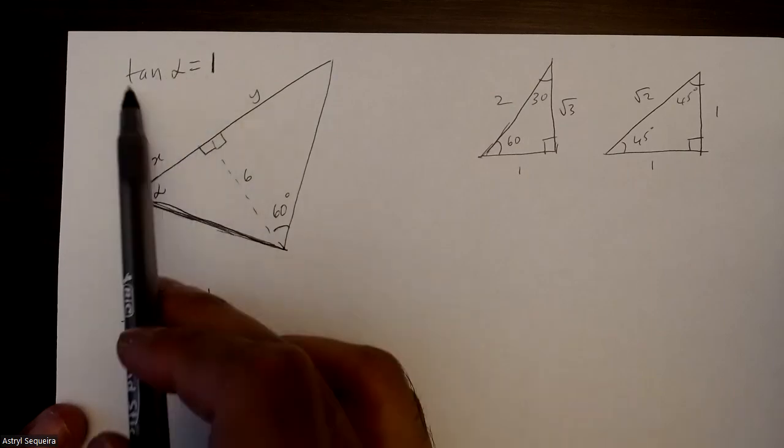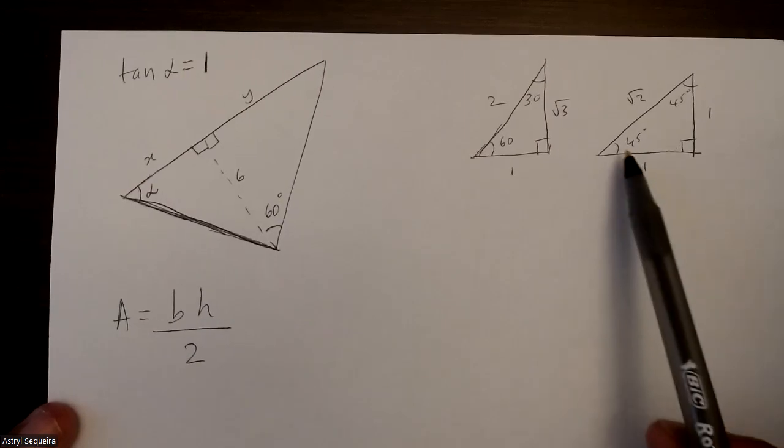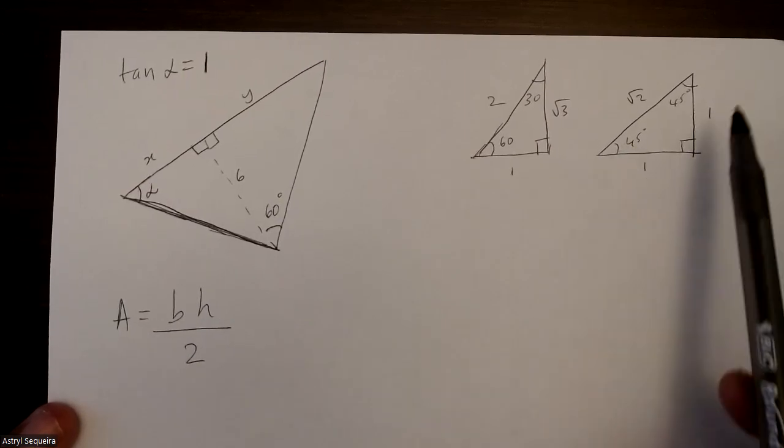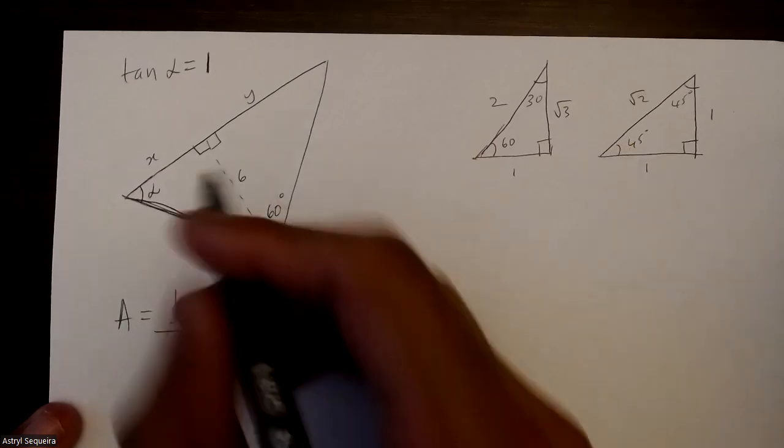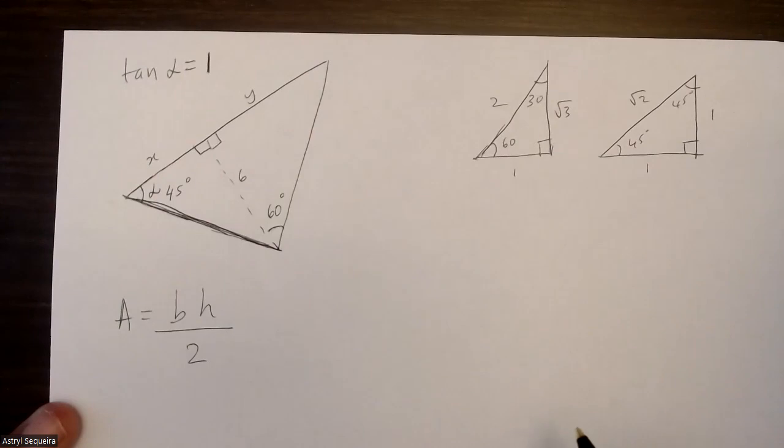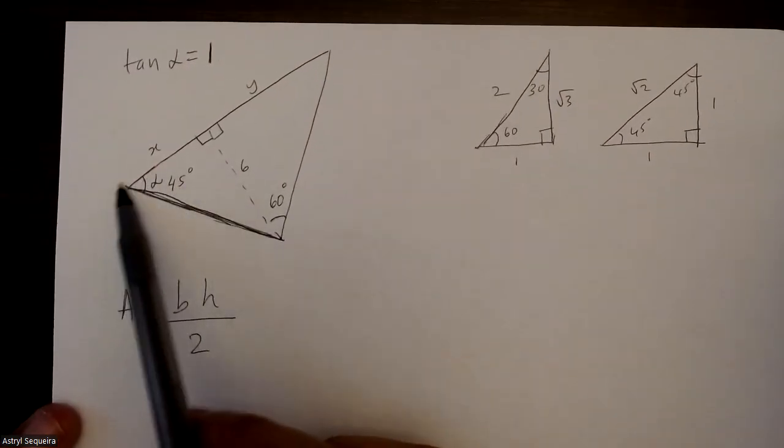The first thing I need to do is determine what α is. If tan α equals one, I'm going to look at my special triangles. I know that tan of 45° is 1 divided by 1, which is 1, which means that α is 45 degrees.